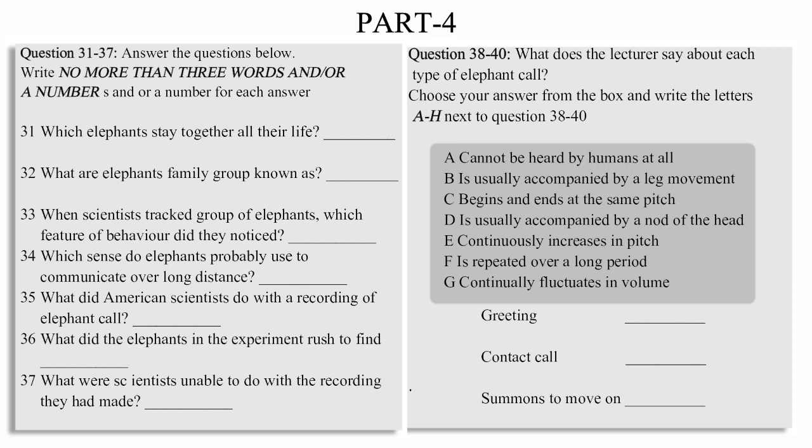In one experiment, scientists fitted groups of elephants with radio tracking collars, and what they observed about their behavior really intrigued them, because they found that there was some sort of coordination between families. For example, two separate family groups might move in parallel to each other, miles apart, and then change directions simultaneously, either turning or moving towards each other. Now, elephants have a keen sense of smell, which they use whenever they can. But smell alone couldn't account for these synchronized movements, because the wind often carries odors in the wrong direction. So, the scientists concluded that the elephants were using their hearing instead, and attention then turned to the nature of elephant calls.